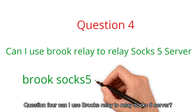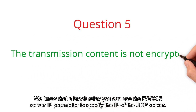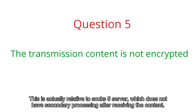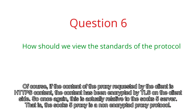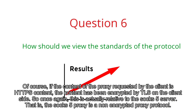Question 4: can you use brook relay to relay a SOCKS5 server? With brook relay, you can use the SOCKS5 server IP parameter to specify the IP of the UDP server. Question 5: the transmission content is not encrypted. This is relative to the SOCKS5 server, which does not process the content after receiving it. Of course, if the client requests HTTPS content, it has already been encrypted by TLS on the client side. So the SOCKS5 proxy is also a non-encrypted proxy protocol.